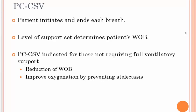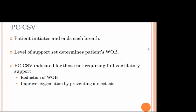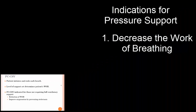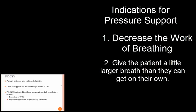CSV is spontaneous ventilation, so pressure control spontaneous means the patient initiates and ends each breath. The level of support determines the patient's work of breathing. Pressure control spontaneous is indicated for those not requiring full support — it reduces work of breathing and improves oxygenation by preventing atelectasis. We refer to this as pressure support ventilation, which has two indications: primarily to overcome the resistance of the artificial airway, and secondarily to give the patient a larger tidal volume than they could achieve on their own — either way, a reduction in the work of breathing.